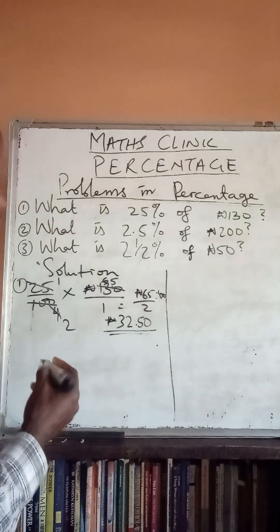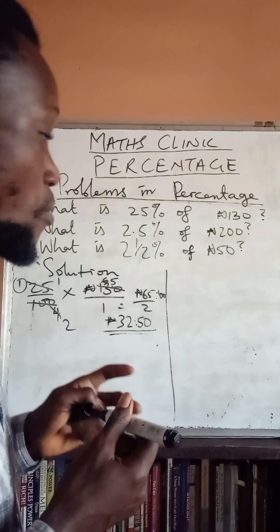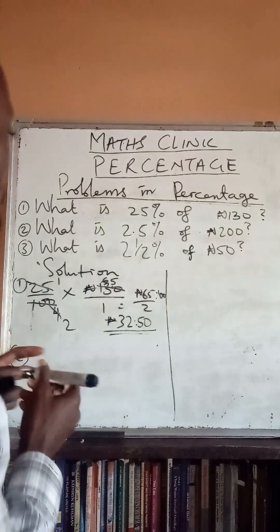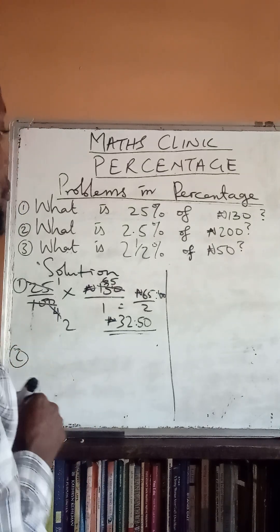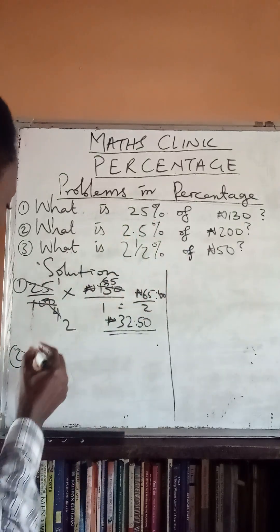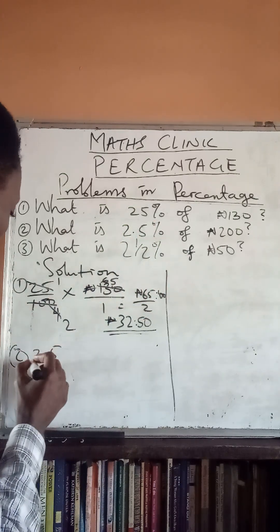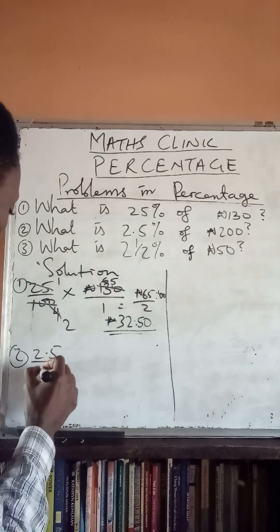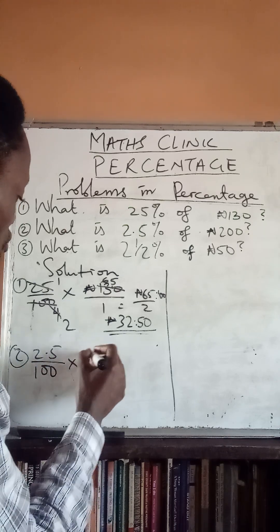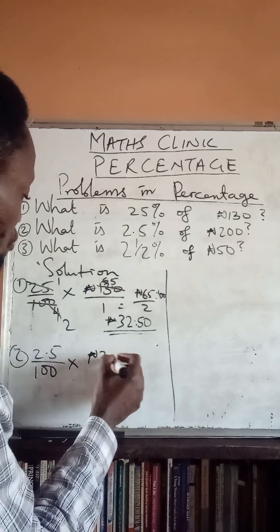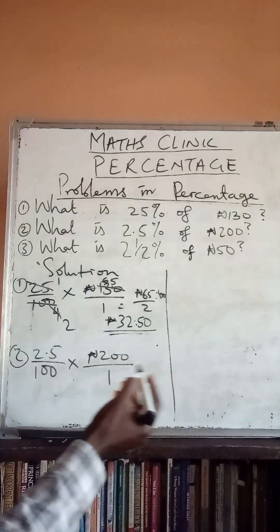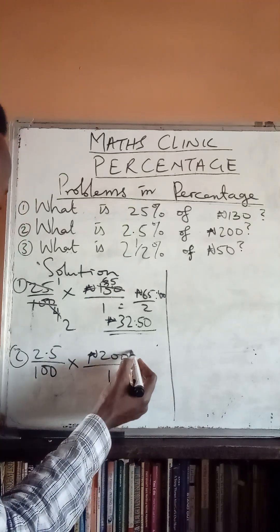Number two: what is 2.5% of 200 naira? 2.5% means 2.5 over 100, times 200 naira over 1. This is a straightforward division — we cross this zero with this zero, and this zero with this zero.